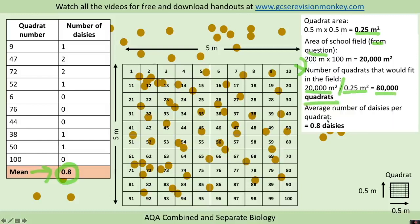So if 80,000 quadrats fitted in our field and the number of daisies in each quadrat was 0.8 as an average, then the estimated number of daisies in the whole field would be our number per quadrat multiplied by the number of quadrats that would fit in the field.